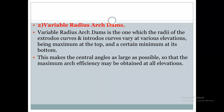Some differences exist between constant radius and variable radius arch dams. In a constant radius arch dam, the radius remains constant and the center points lie on the same vertical line. But in a variable radius arch dam, the centers at various elevations may be different. This makes the central angle as large as possible so that maximum arch efficiency may be obtained at all elevations.